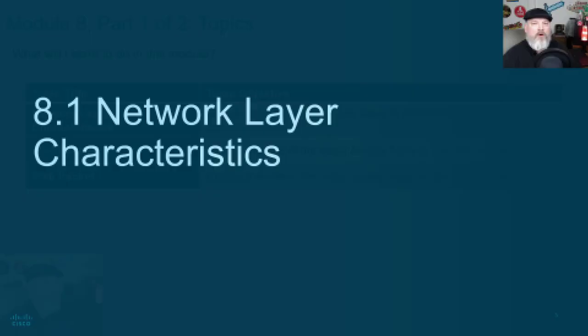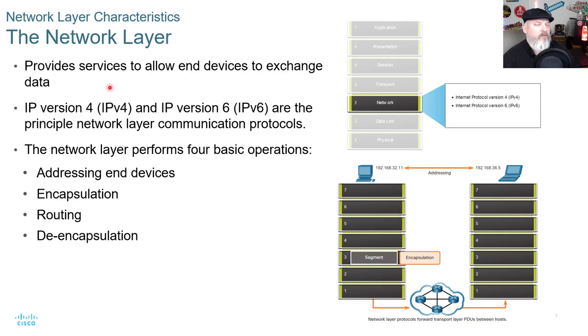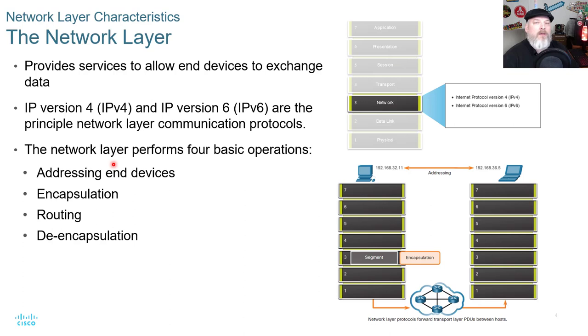The network layer is Layer 3. We've already talked about the physical layer and the data link layer, and now we're looking at the network layer. The network layer provides routing and services to allow end devices to exchange data. IPv4 and IPv6 are the principal network layer communication protocols. The network layer performs four basic operations: addressing end devices, encapsulation, routing, and de-encapsulation.